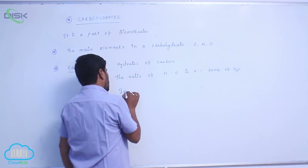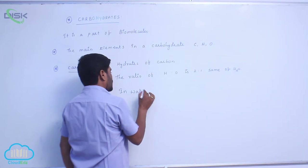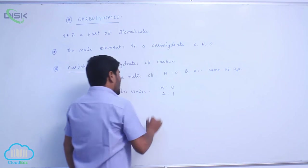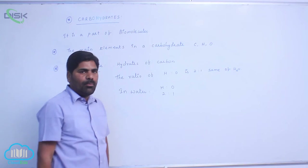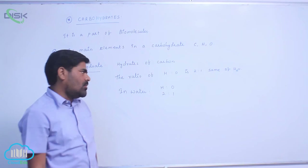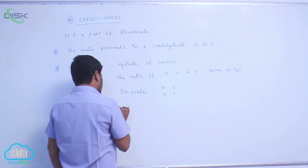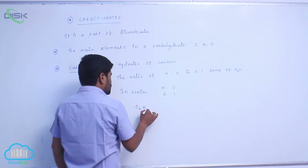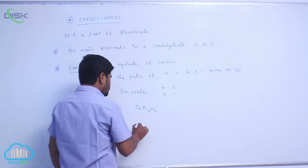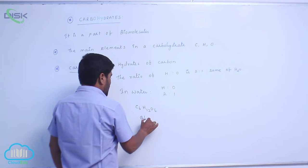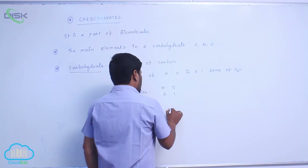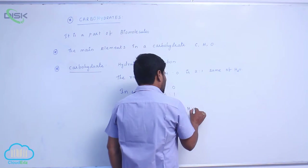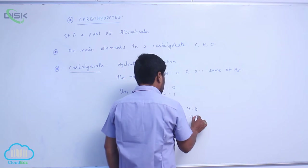In a water molecule, the ratio of hydrogen and oxygen is 2:1 — the same ratio which is present in every carbohydrate. For example, C6H12O6, commonly known as glucose. The ratio of hydrogen and oxygen in glucose is 2:1.